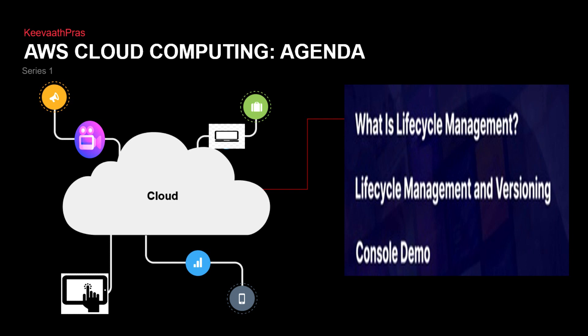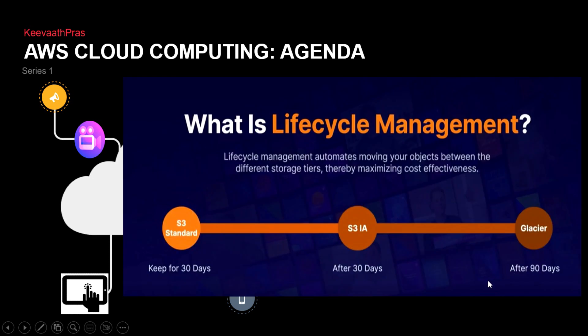One of the key questions is: you need to put your object in S3 Standard. When you're looking at S3 Standard, you need to move to Infrequently Access after 30 days, and after 90 days you have to go to Glacier. That's the name — lifecycle management. That's how we can go to the AWS console.